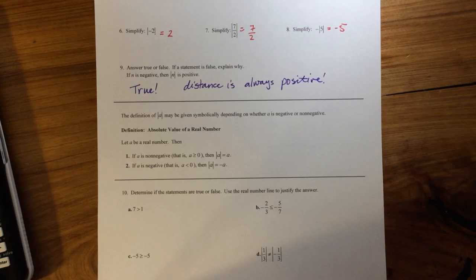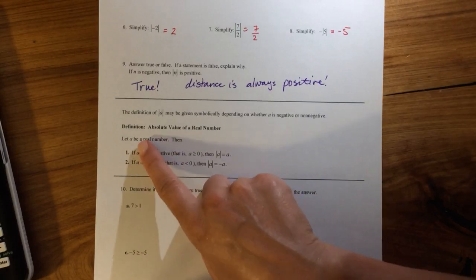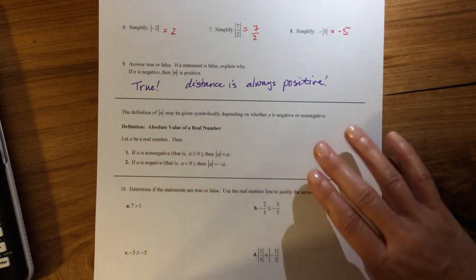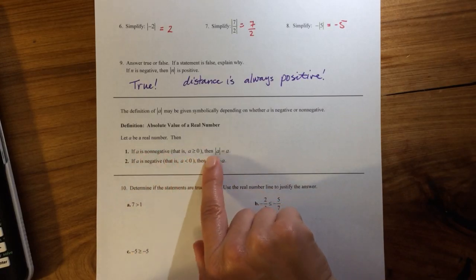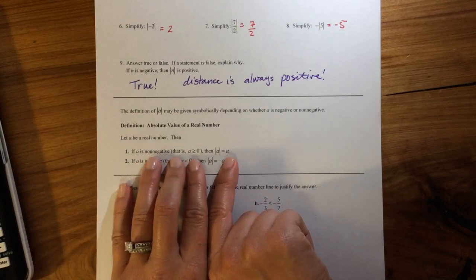The definition of the absolute value of A may be given symbolically depending on A, whether A is negative or non-negative. So let A be a real number. Definition: absolute value of a real number. If A is non-negative, that is, A is greater than or equal to 0, then the absolute value of A is equal to A. Old hat, that's what we already talked about, right?